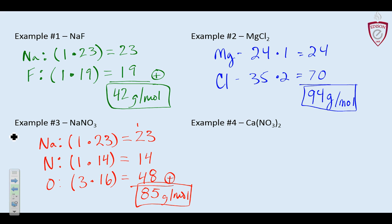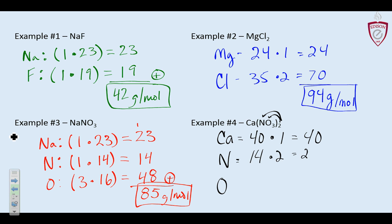Now I have three atoms in mine also: calcium, nitrogen, and oxygen — that's calcium nitrate, Ca(NO₃)₂. We do have to distribute the subscript 2 outside the parentheses. Calcium is 40, and with no subscripts I only have one calcium atom, so that's 40. Nitrogen is 14, and when I distribute the two, I have two of them, so that's 28. Oxygen is 16, and when I distribute the two, I have six of them — not five, which is a very common mistake. Six times 16 is 96. Adding all these up, I get 164 grams per mole.